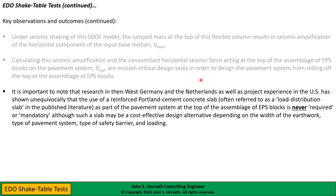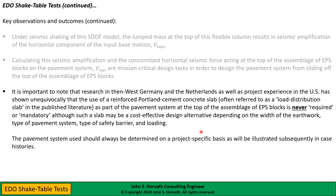I'm emphasizing both the unnecessary sidewalls and the unnecessary concrete slab. They are not bad per se — go ahead and use them if you like, but your client will pay for your conservatism. I have seen hard bid numbers where these add substantial cost to actual projects. The conclusion is that the pavement system used should always be determined on a project-specific basis, which I will illustrate with case histories.